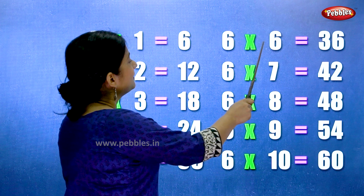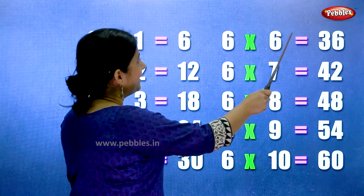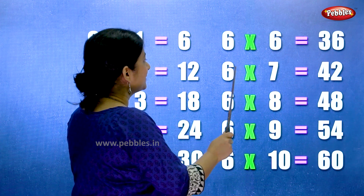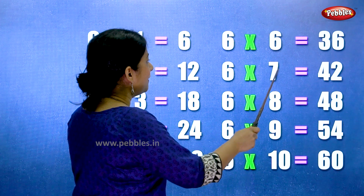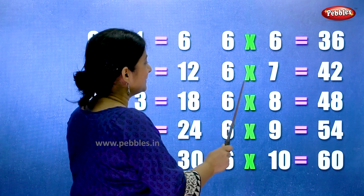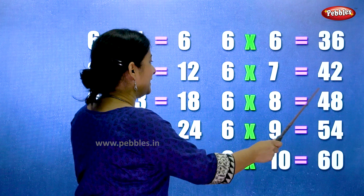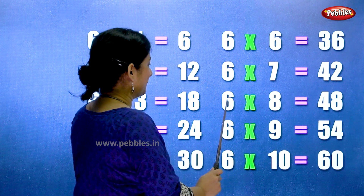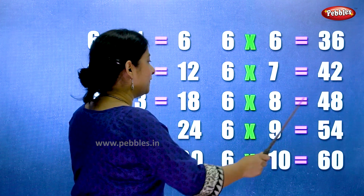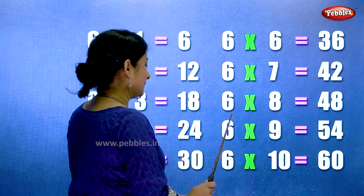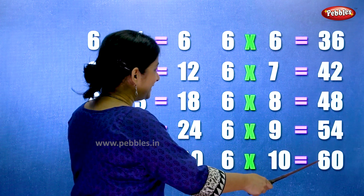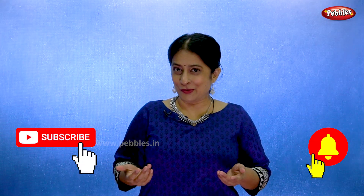Six sixes are thirty-six. Six sevens are forty-two. Six eights are forty-eight. Six nines are fifty-four. Six tens are sixty. Thank you for watching the video.